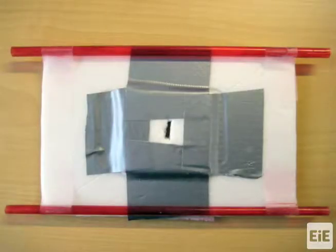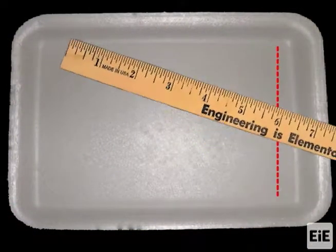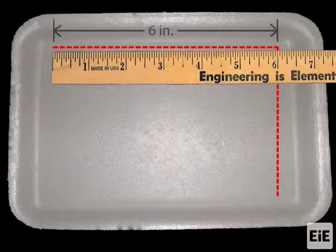The first step is to create the foam raft that will move along the finished sail track and hold students' sail designs. Begin by cutting a 4-inch by 6-inch rectangle out of the center of the foam tray.